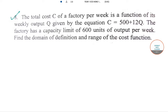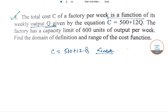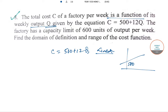The first question: the total cost C of a factory per week is a function of its weekly output Q, and the equation is given as C = 500 + 12Q. It's a linear function which does not pass through the origin — an upward sloping function with intercept value 500, and it's a positively sloping function.